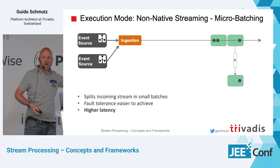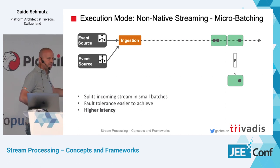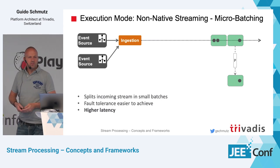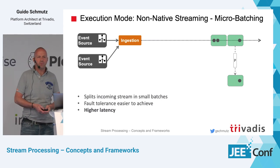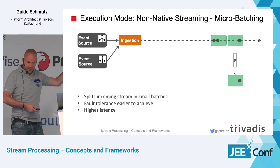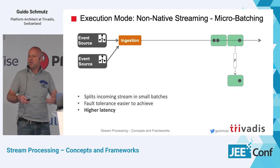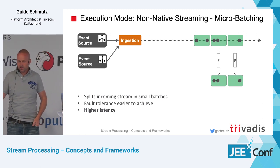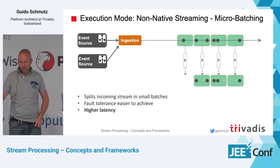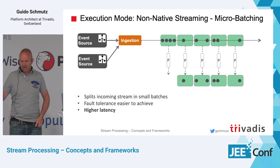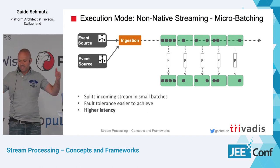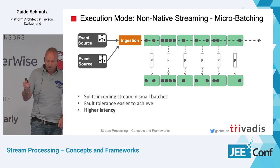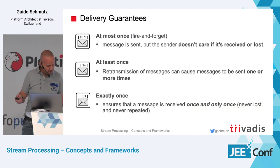This is critical: if your use case requires sub-second latency, don't start with Spark Streaming — you'll know from the beginning it won't work. I'm not saying Spark Streaming is bad, but it has the micro-batching model. Each batch window will vary in size depending on how much data arrives per time interval.